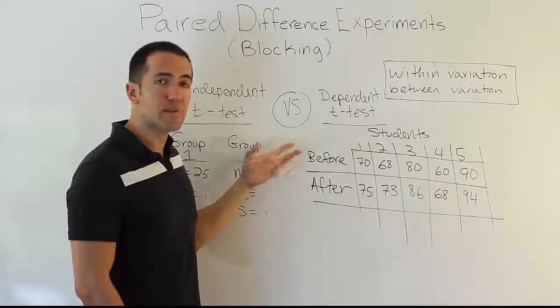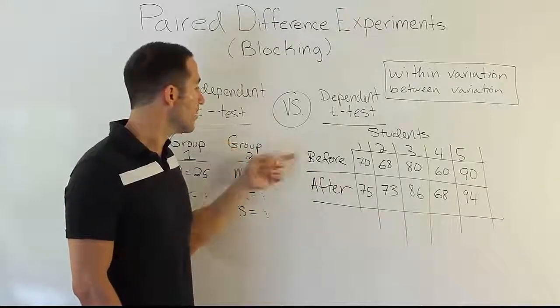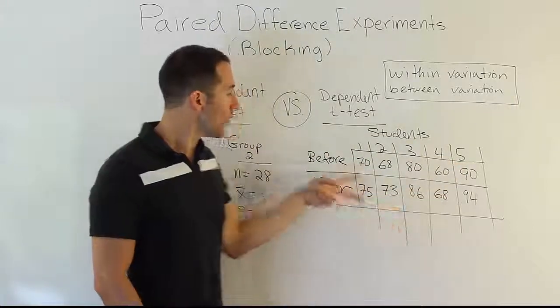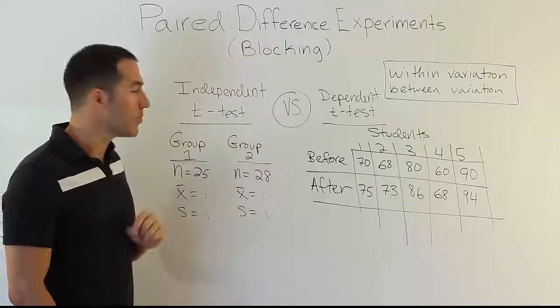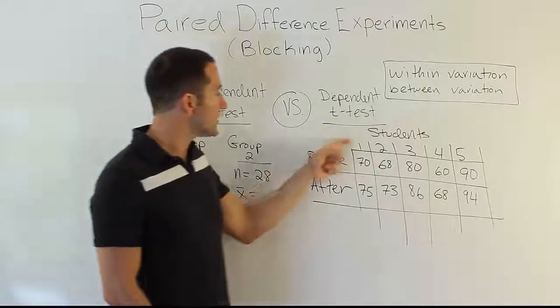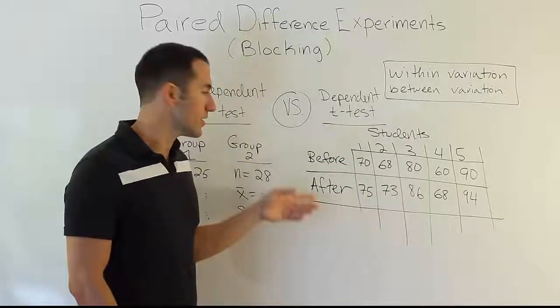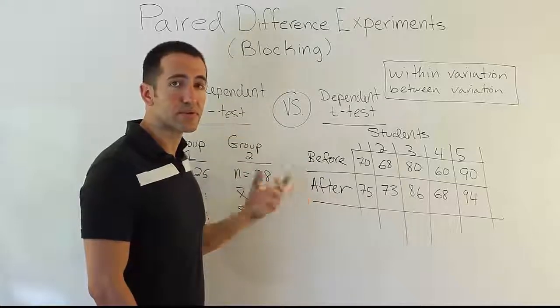In this case, the classic example I've drawn on the board involves students taking an exam twice. They take it before they do some kind of prep work, and then after they've done the prep work. Before the prep work, they have this set of scores, after they have this set of scores, and we want to compare the two sets of scores. Because each student takes the test twice, there can't be different sample sizes. In other words, there'll be exactly as many before scores as there are after scores.